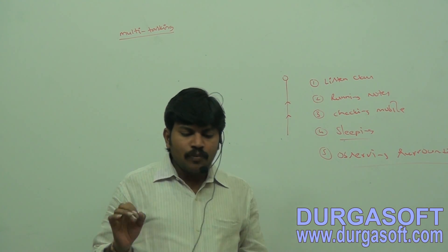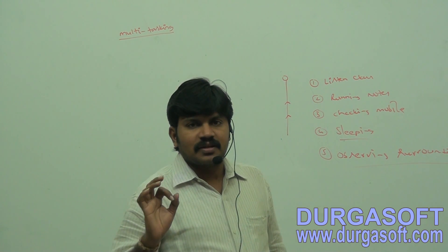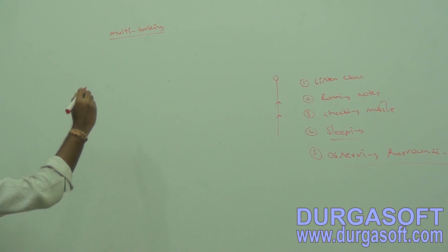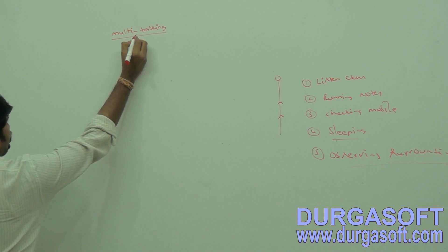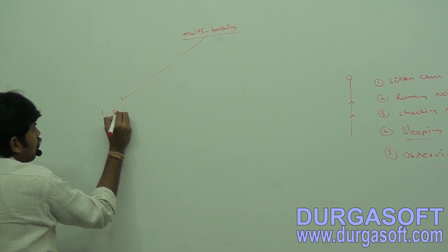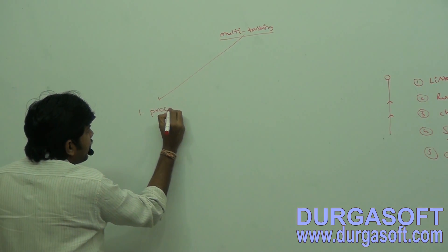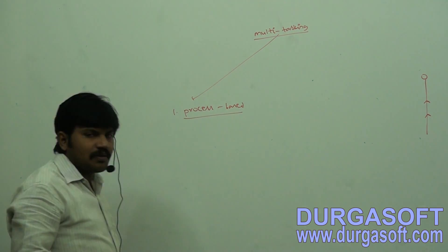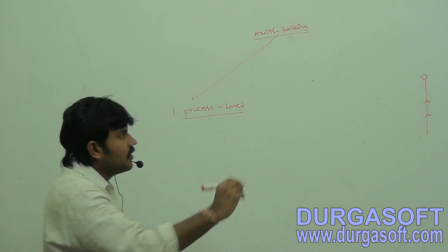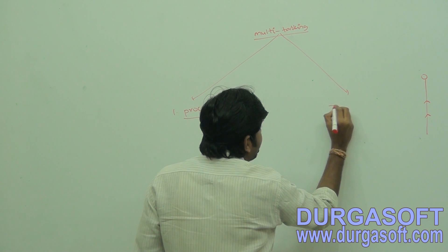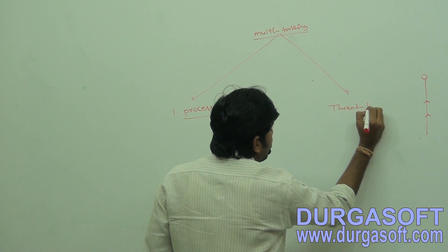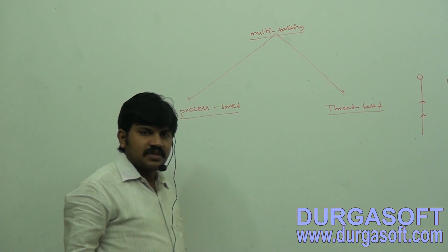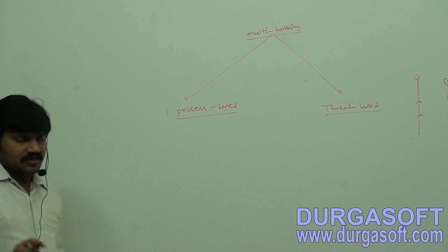Now, how many types of multitasking are there? There are just two categories. The first one is process-based multitasking, and the second one is thread-based multitasking.